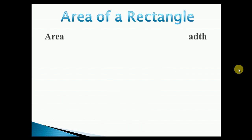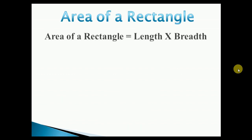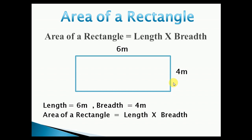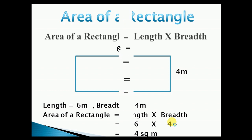Area of a rectangle. Area of a rectangle is equal to length into breadth. This is a rectangle. Area of a rectangle equals 6 into 4, which equals 24 square meters.